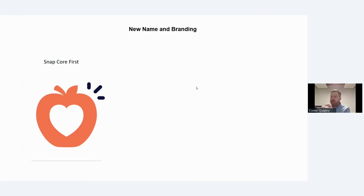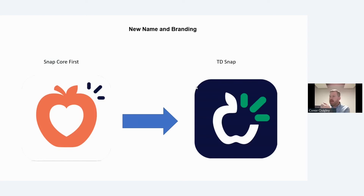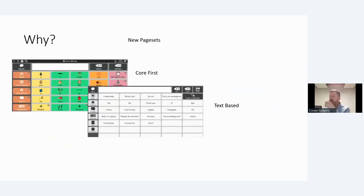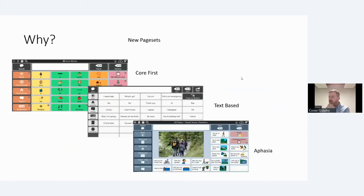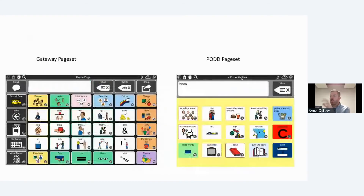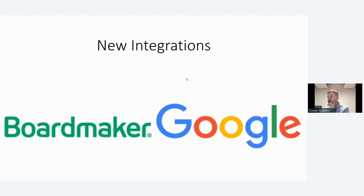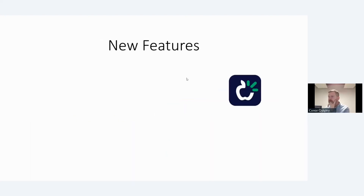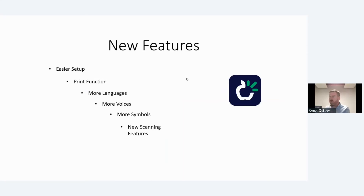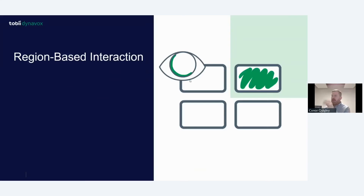A quick recap: if you know it as Snap Core First, it's now called TD Snap. There's now a text-based page set for text users and an aphasia page set, giving three different page sets included. You can also add a Gateway or POD page set as paid extras. New integrations include Boardmaker integrating directly into it and Google Assistant as discussed. New features include easier setup, a print function, more symbols, new scanning features, better eye gaze functionality, and new resources.